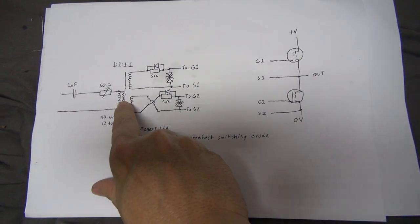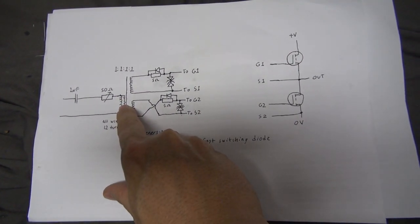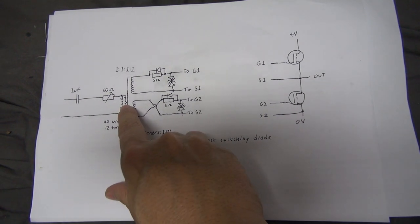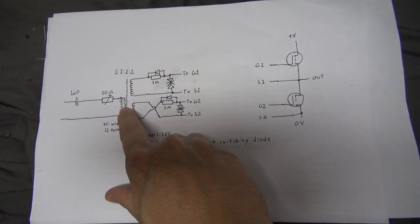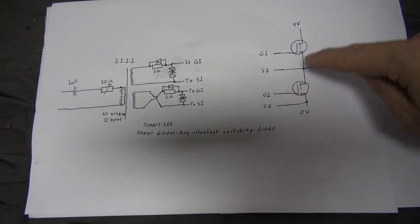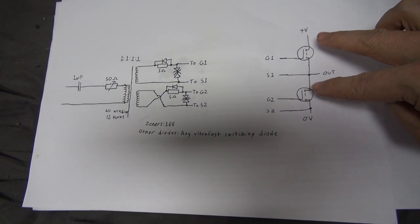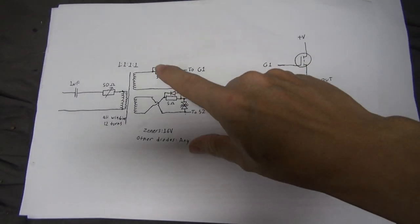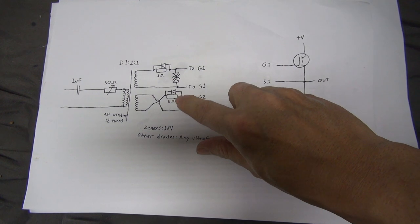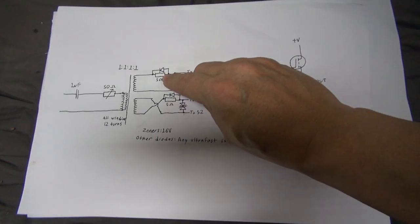And then there's the transformer. We have the two input windings connected in parallel. With two input windings it just magnetizes better. And with the output windings you can see one is flipped here because we want the MOSFETs to take it in turn turning on and off. We don't want them both coming on together or both going off together.